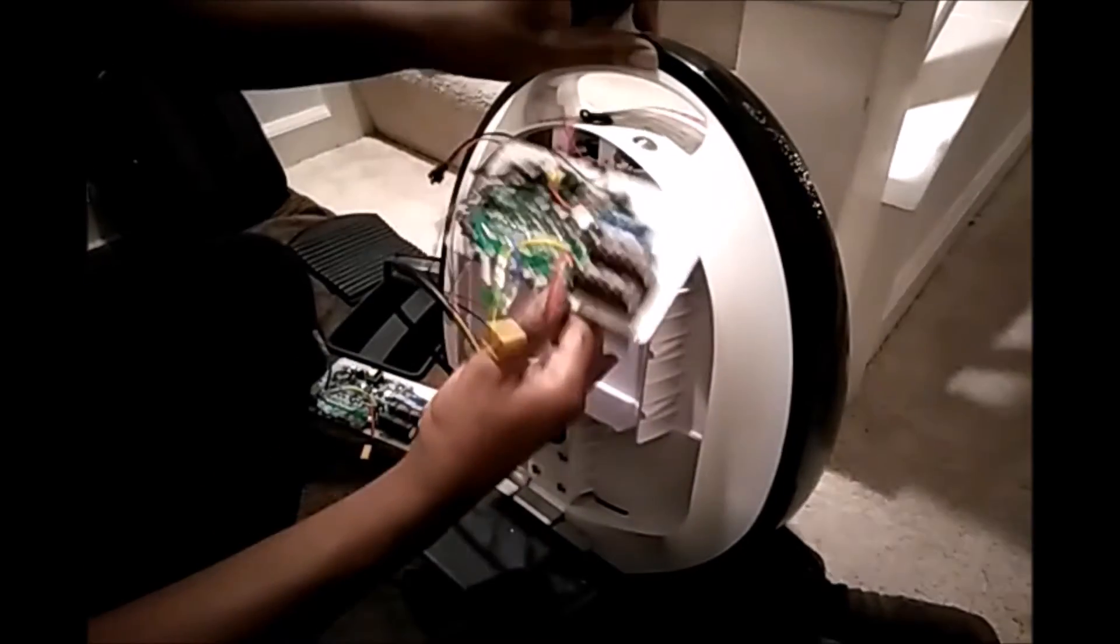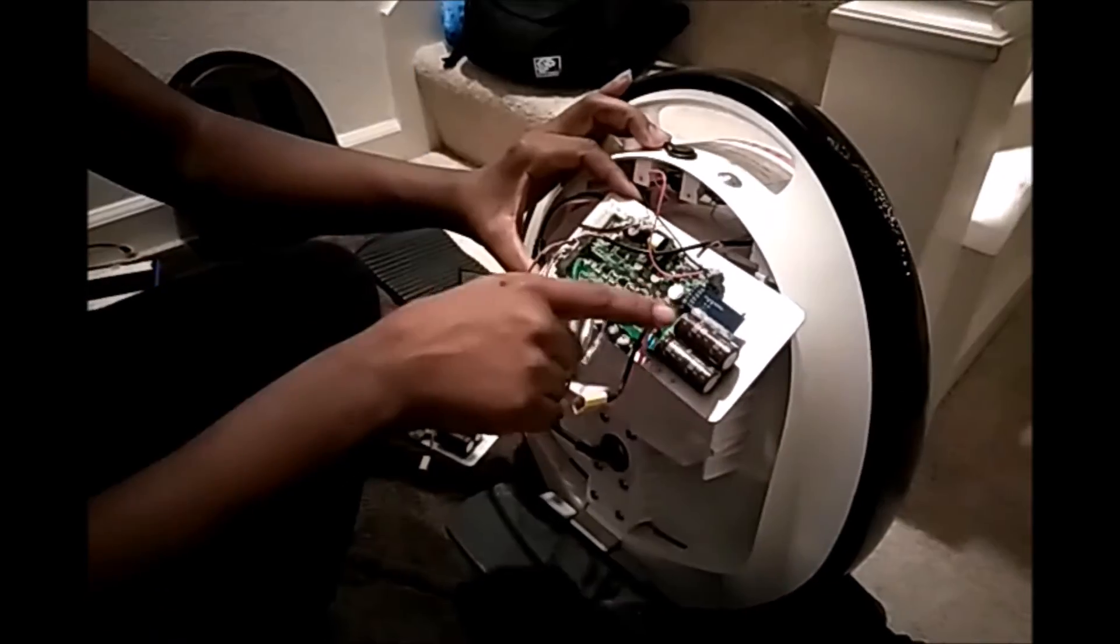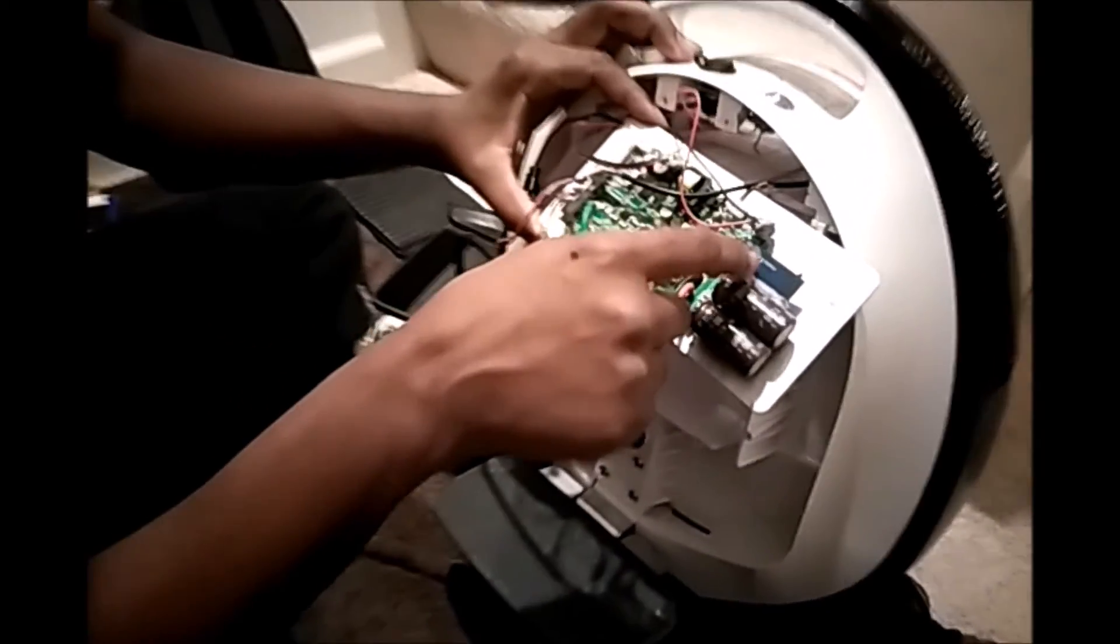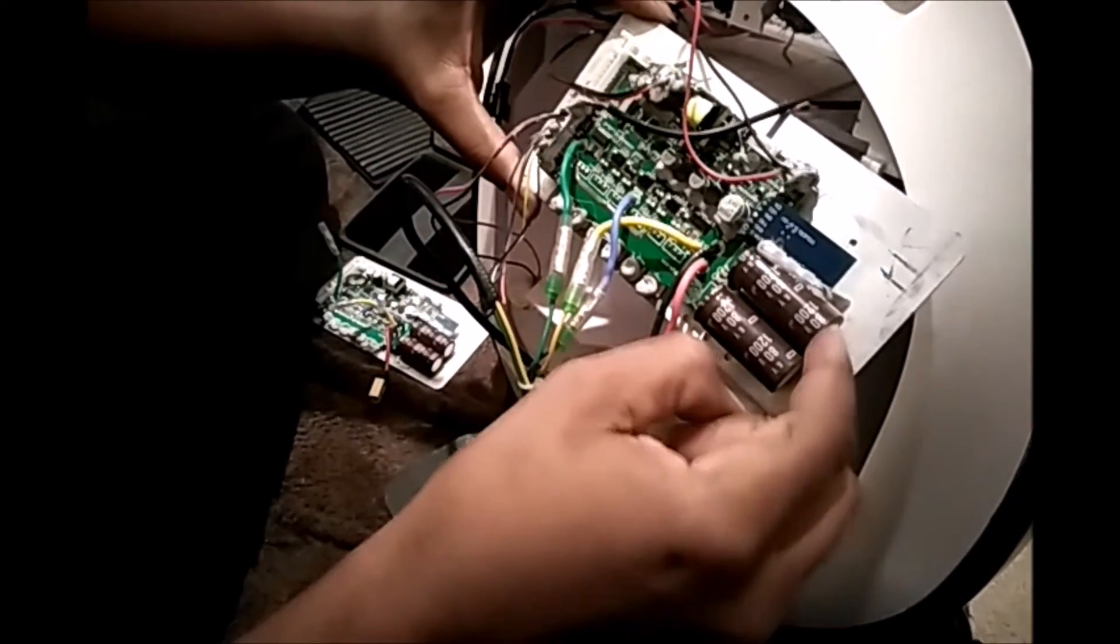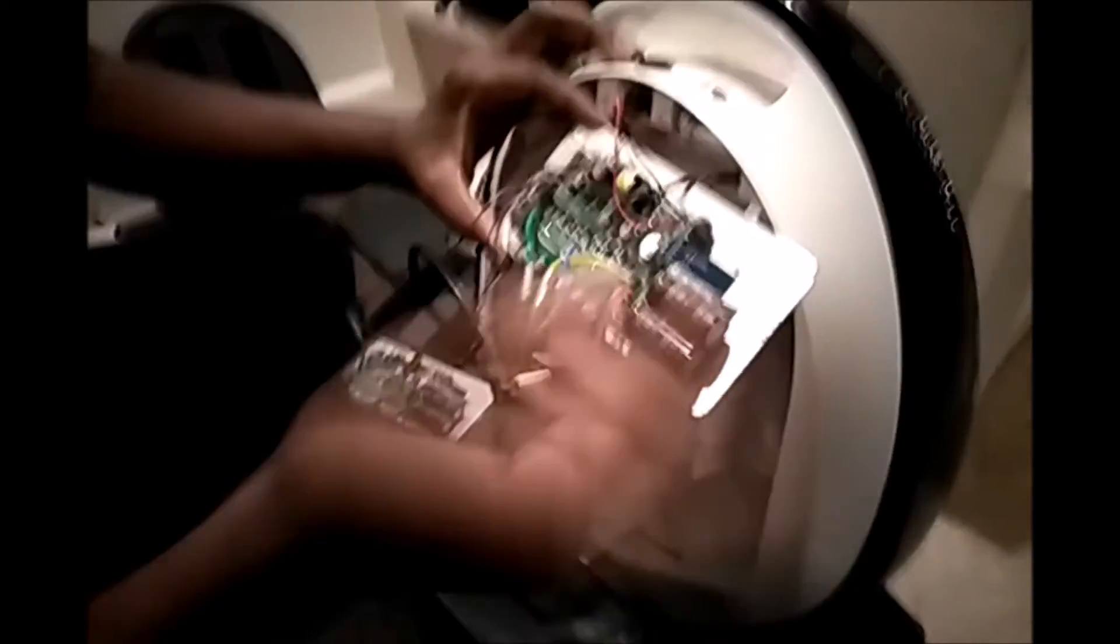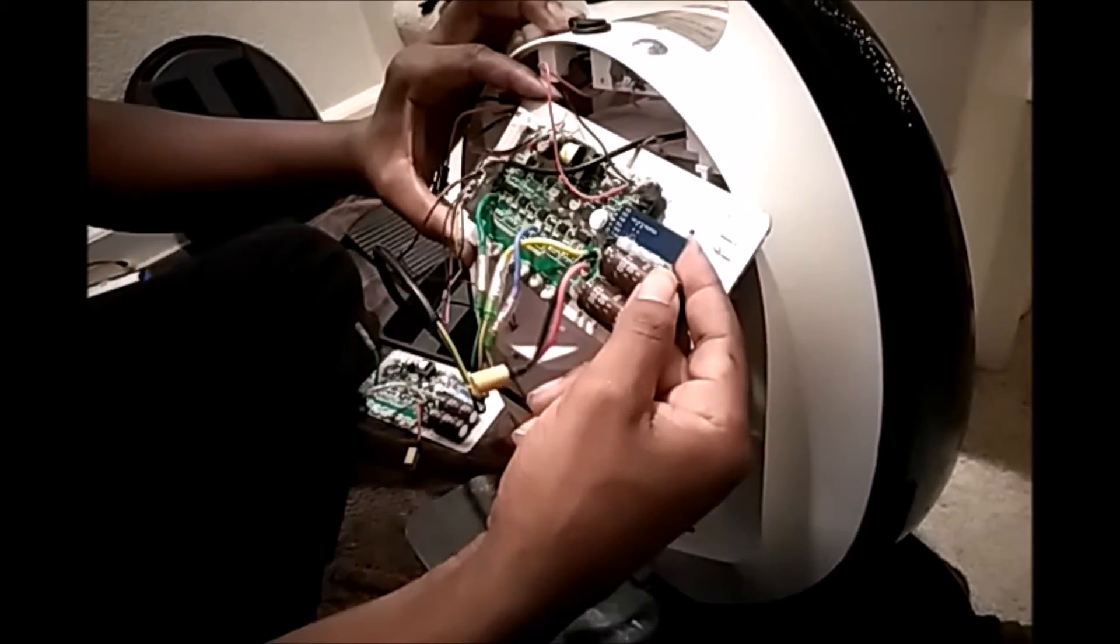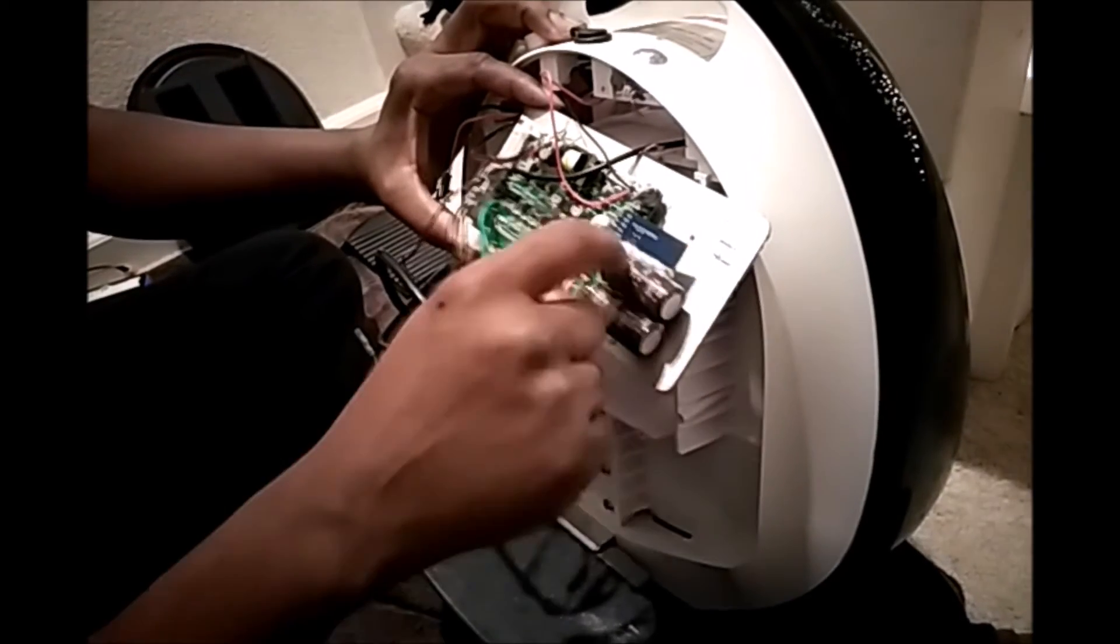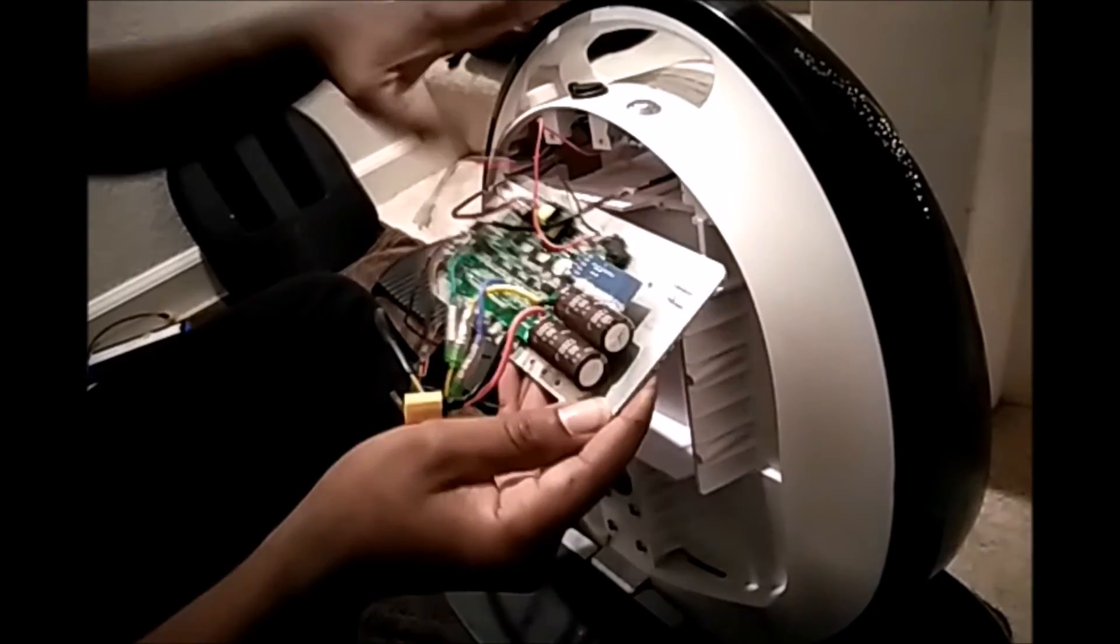Once you get it out like this, the Bluetooth module is actually right here, and usually it's siliconed to one of these big capacitors here. You can actually take an exacto knife or any sharp knife and you can cut along the edge of that to release the silicone. I won't actually do it with this board, I'm gonna go ahead and slide this back in just to show you how to remove it.